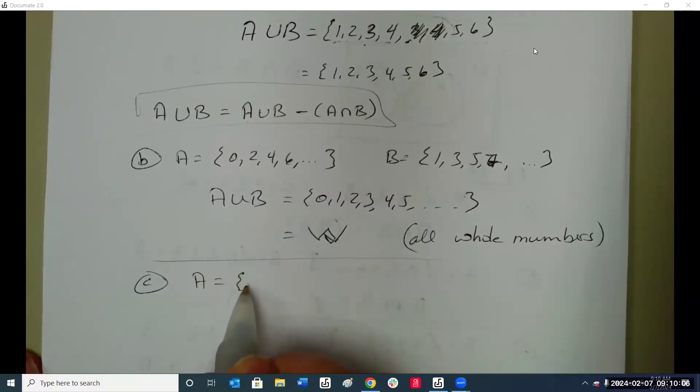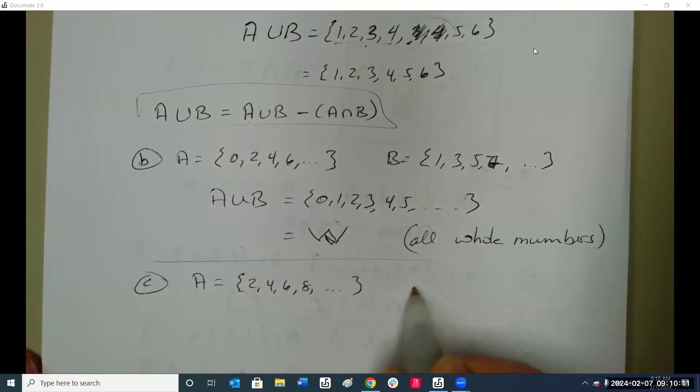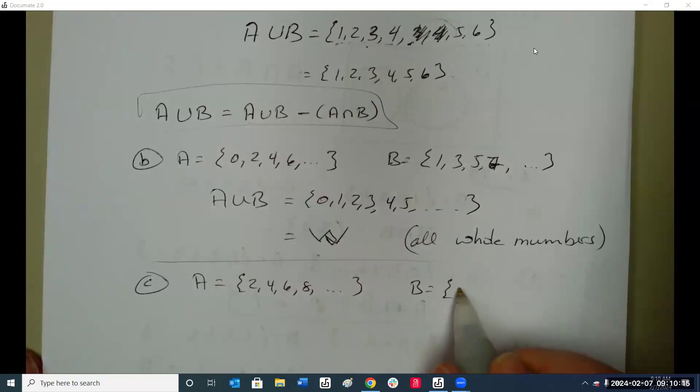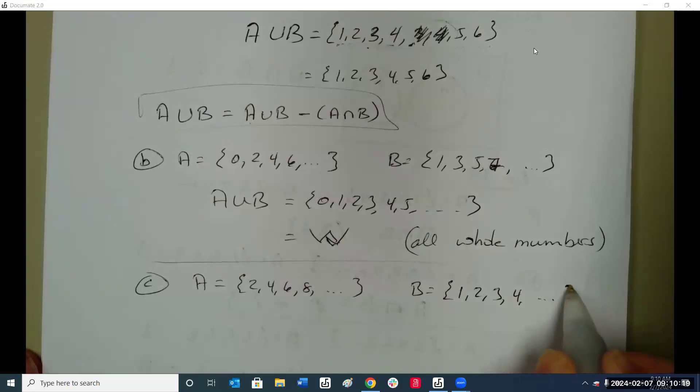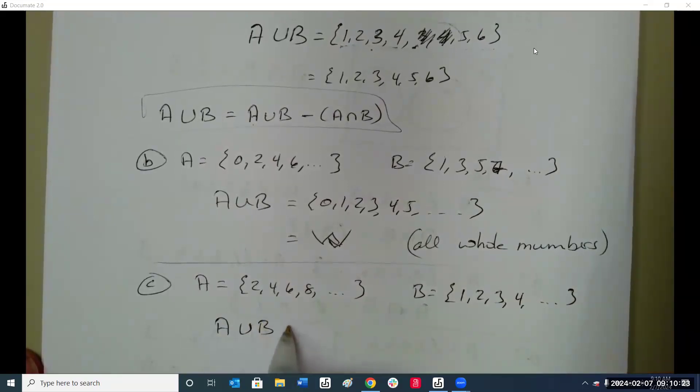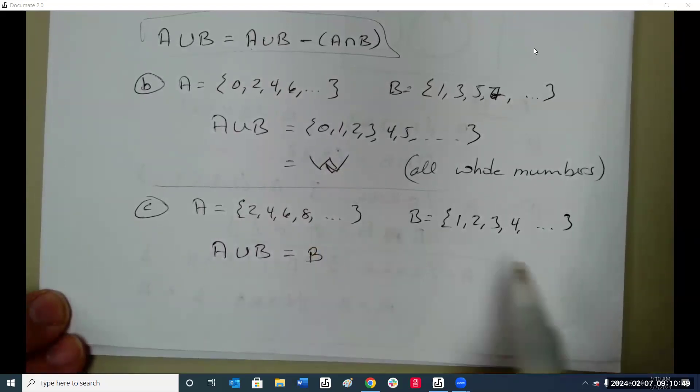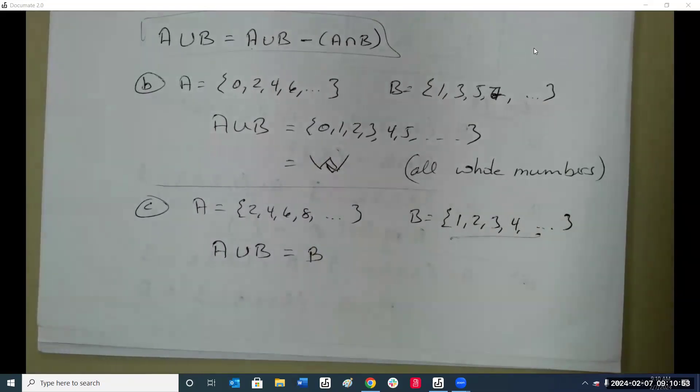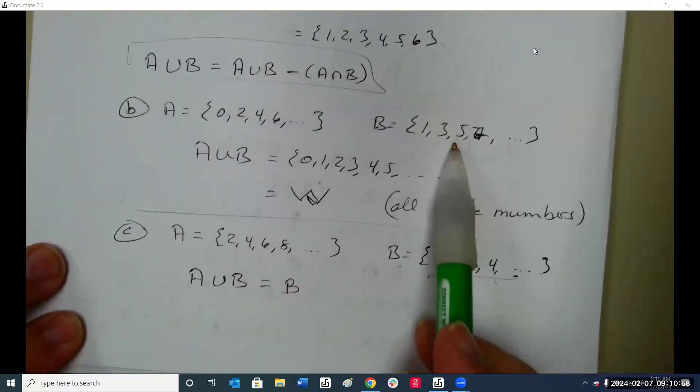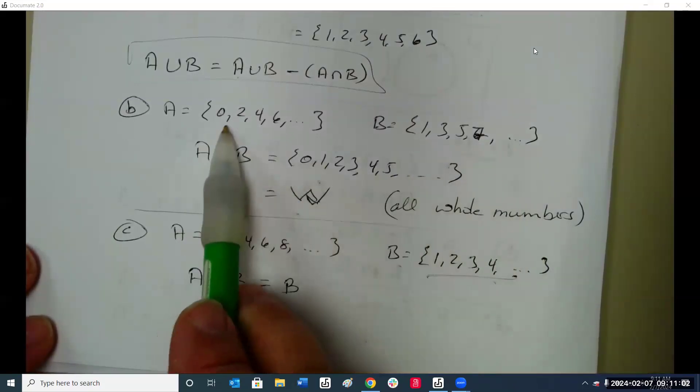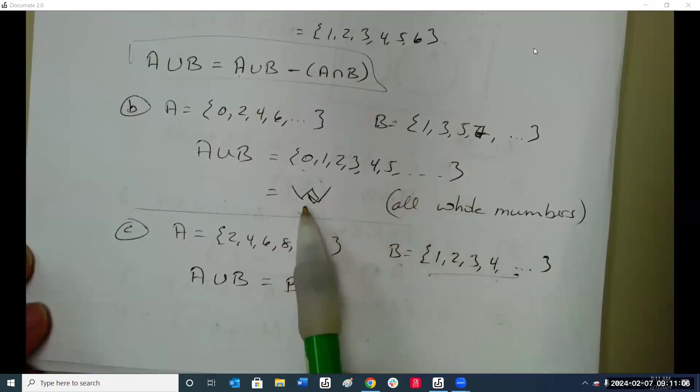A is all of the even numbers. B are all the natural numbers. A union B would be what? All the whole numbers. The reason I couldn't do it over here is because this set is only the counting numbers, not the whole numbers. We have that zero to take care of. So that's why we had to list them all as all the whole numbers.